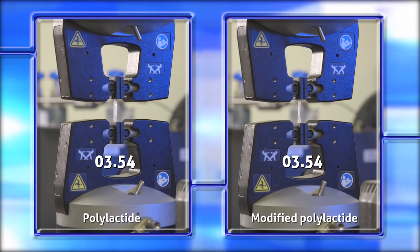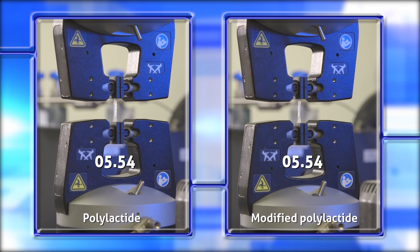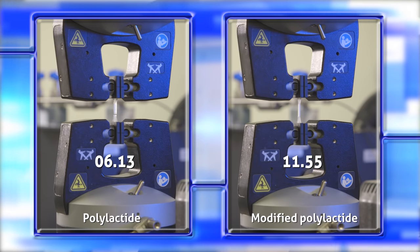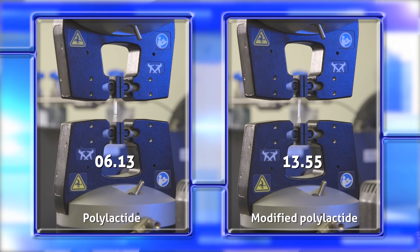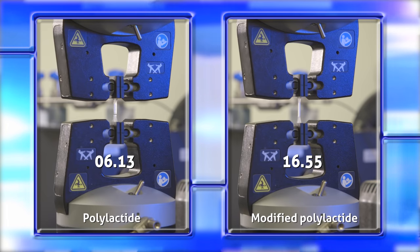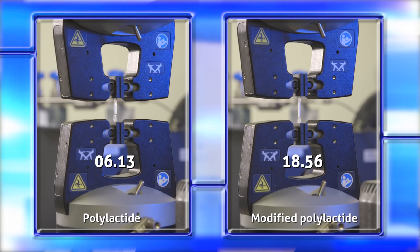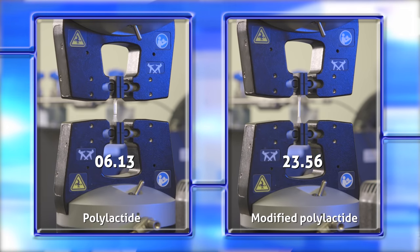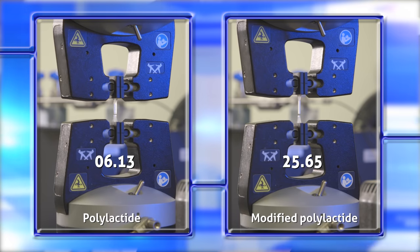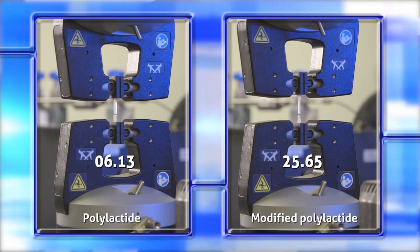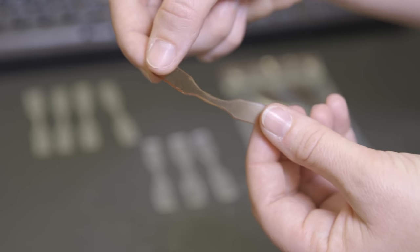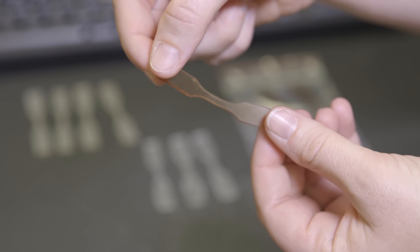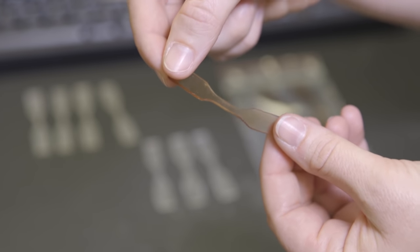What we're looking at here is a sample of polylactide, which is a very brittle polymer — you can see it breaks very quickly, with very little change in length before fracture. In contrast, polylactide modified with vegetable oils can undergo a significantly higher elongation before breaking, making it a significantly tougher material. This material is called a thermoplastic elastomer, and it's derived from vegetable oils like soybean oil and palm kernel oil.